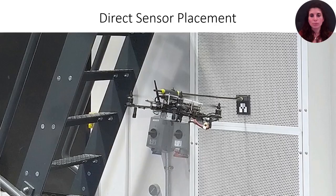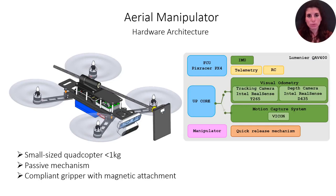To start with, I will present direct sensor placement — a way to attach a sensing device directly onto a surface. The platform used for direct sensor placement is an aerial manipulator, in other words, a quadcopter equipped with a one degree of freedom mechanism on board. Such a one degree of freedom manipulator mechanism is passive and has a compliant gripper. On the compliant gripper, we have the housing for a sensory device with a magnetic attachment.